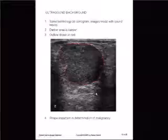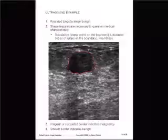Now, suppose you're looking at ultrasound. The technology is the same as a sonogram, where images are made with sound waves. The darker area is the cancer, with the outline drawn in red. In the case of sonograms, cancer is detected more by shape — by various shapes around the lesion. This is the important aspect of detecting malignancy. In general, if the shape is rounded, it tends to mean benign.